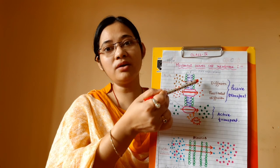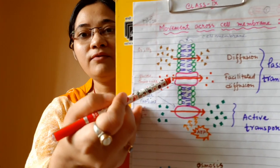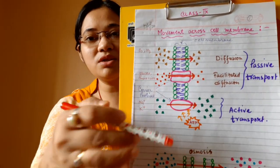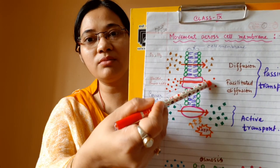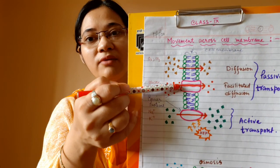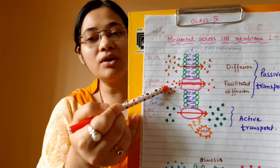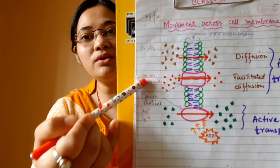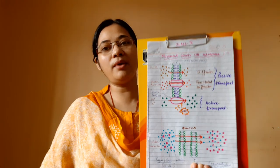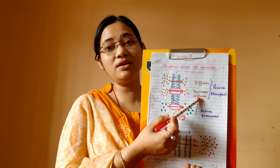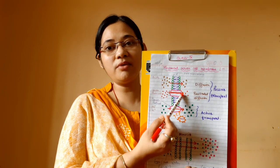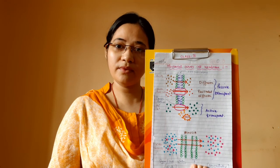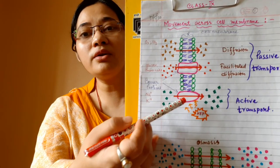In facilitated diffusion, carrier protein molecules form a sort of channel through which molecules like glucose and amino acids can easily pass through the cell membrane. So this is facilitated diffusion — it takes place with the assistance of carrier protein molecules.